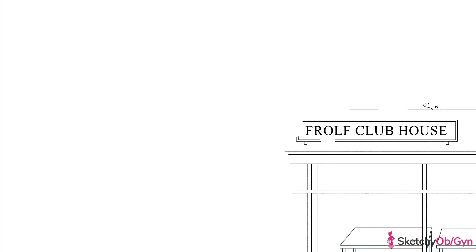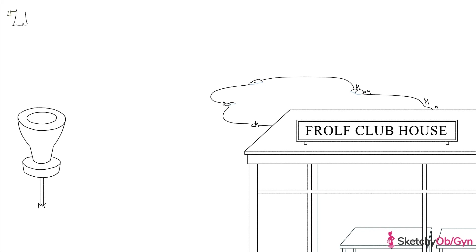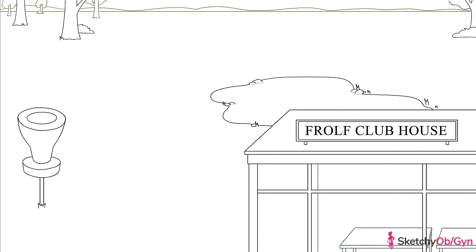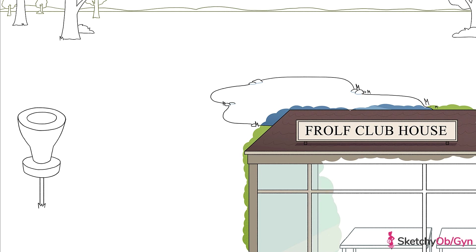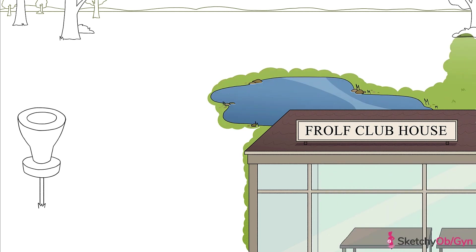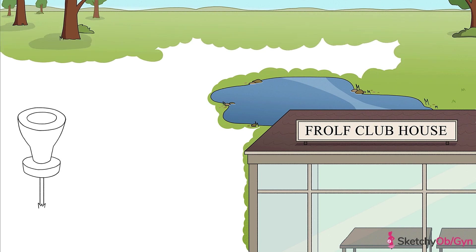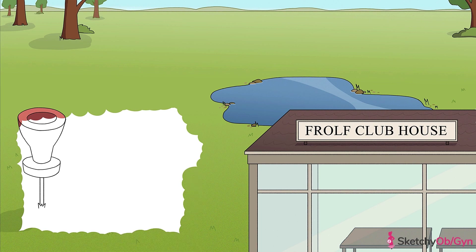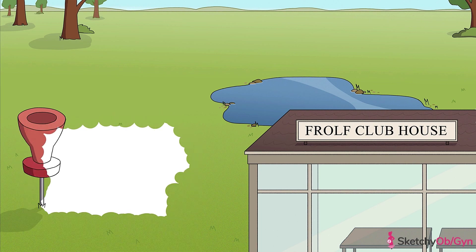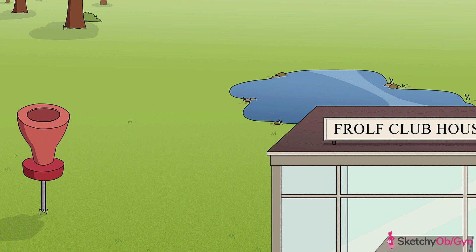There's nothing I love more than a relaxing round of frolf — that's frisbee golf for those of you not in the know — and we're going to need all the relaxation we can get while we talk about our next hair-raising topic: abnormal placentation. For this lesson, all of the frisbee target baskets are going to represent the internal cervical os.